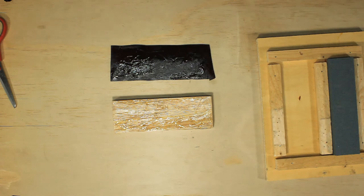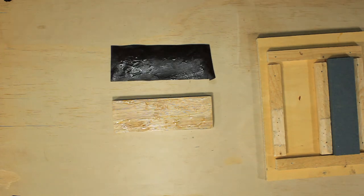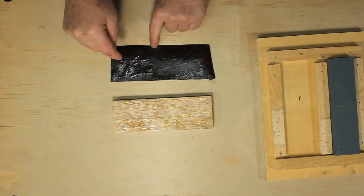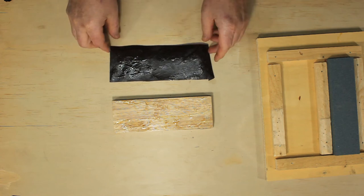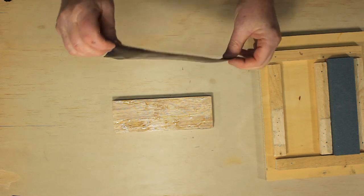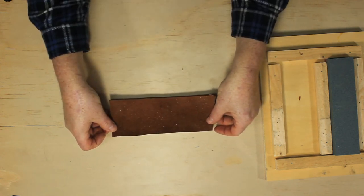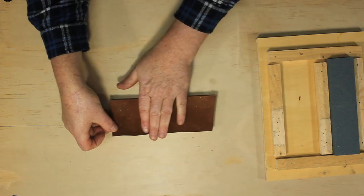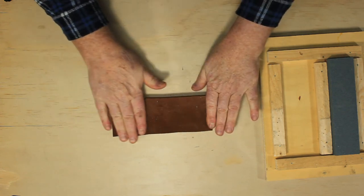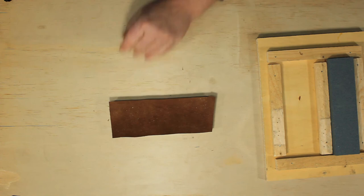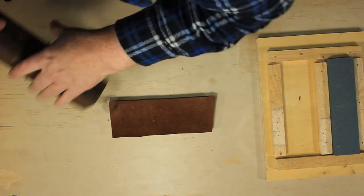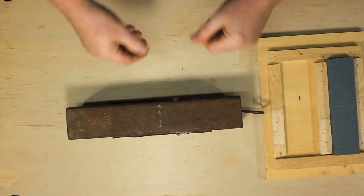Leave the glue for a few minutes to get tacky. It's now a few minutes later and the glue has started to tack. So we very carefully, because we only get one try at this, lay it down and smooth from one end to the other. Then place a heavy weight on it and let it finish drying.